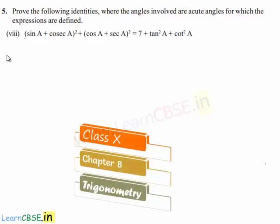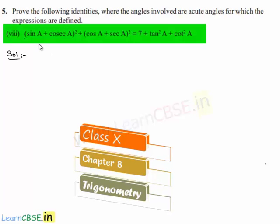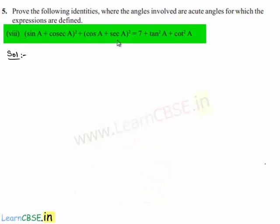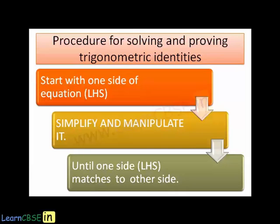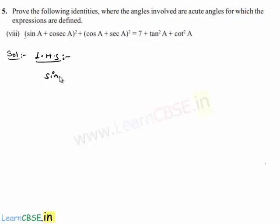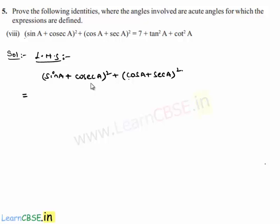Moving on to the eighth bit of the fifth problem, we are given to prove that sin a plus cosecant a whole squared plus cos a plus secant a whole squared is equal to 7 plus tan squared a plus cot squared a. Let us consider the left hand side. Both terms are in the form of a plus b whole squared, so let us apply the formula a plus b whole squared equals a squared plus b squared plus 2ab.